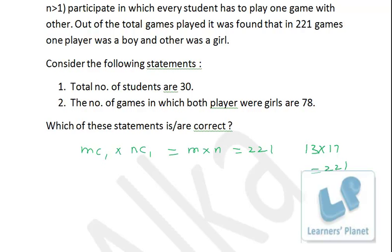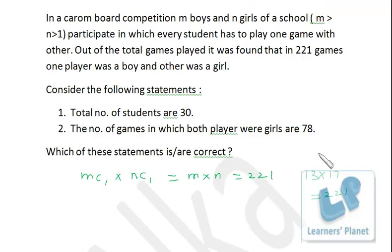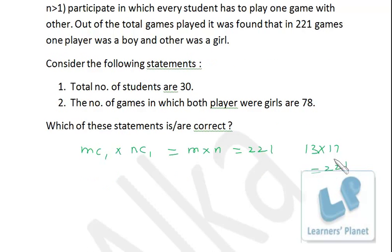The only other option is 1 into 221. But both boys and girls are more than one. So we are left with just one combination. Now, which of them is M and which of them is N? We are already given that M is greater than N. That means M is 17 and N is 13. That means 17 boys and 13 girls.